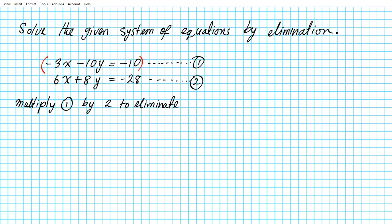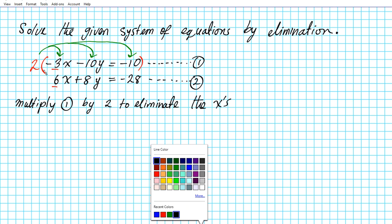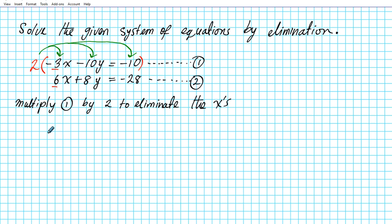By multiplying the first equation by 2 we achieve the opposite of 6, which is negative 6. We're focusing on the coefficients of the variables. To prevent forgetting distribution, we'll use arrows as a visual guide to distribute to all three terms on both sides. That gives us: 2 times negative 3x is negative 6x, 2 times negative 10y is negative 20y, and 2 times negative 10 is negative 20. We bring down equation 2 unchanged: 6x plus 8y equals negative 28.